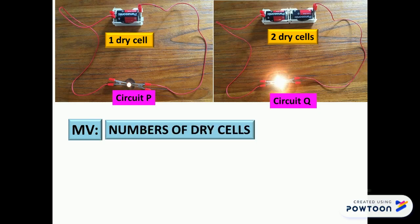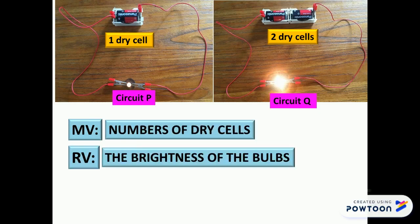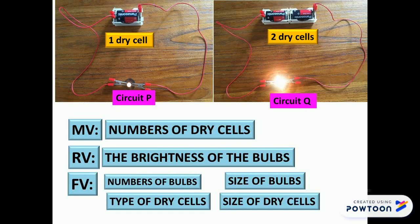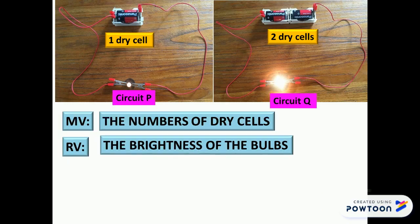The answer is the number of dry cells, and the responding variable is the brightness of the bulbs. The fixed variables are the number of bulbs, the size of bulbs, the type of dry cells, and the size of dry cells.